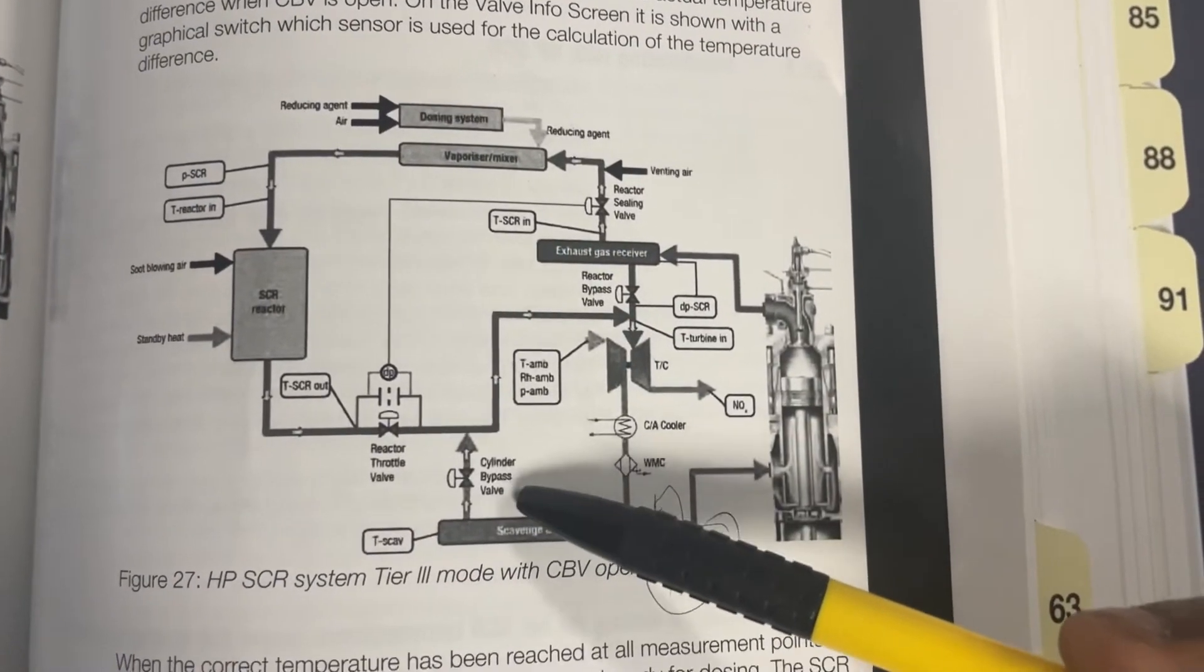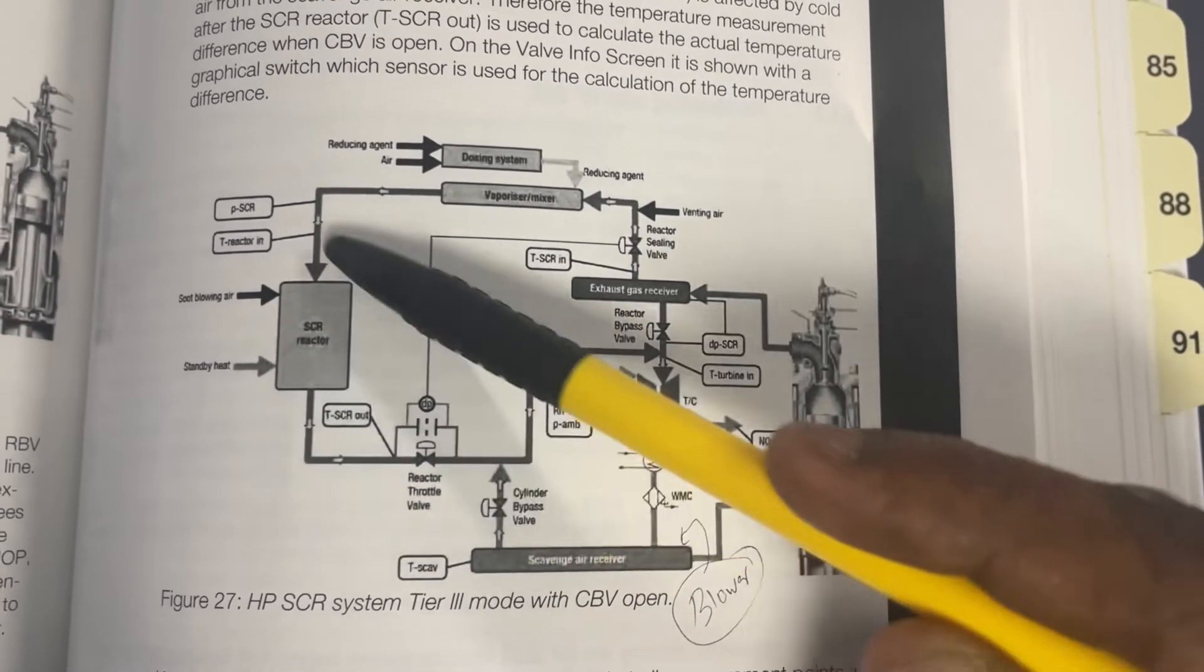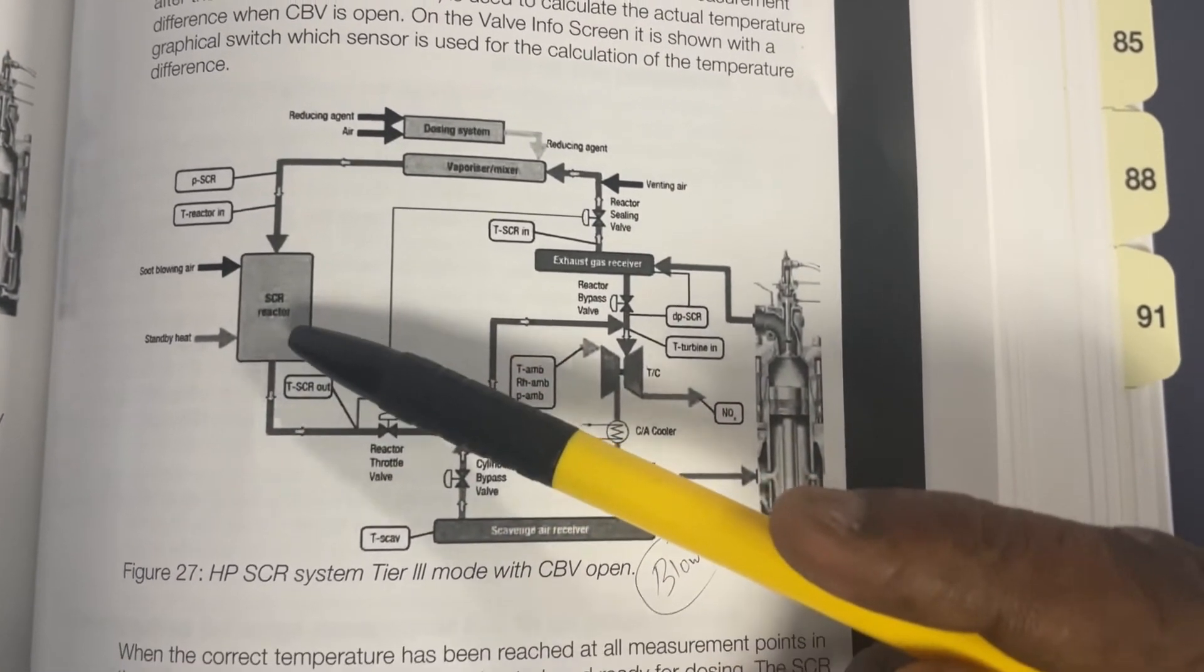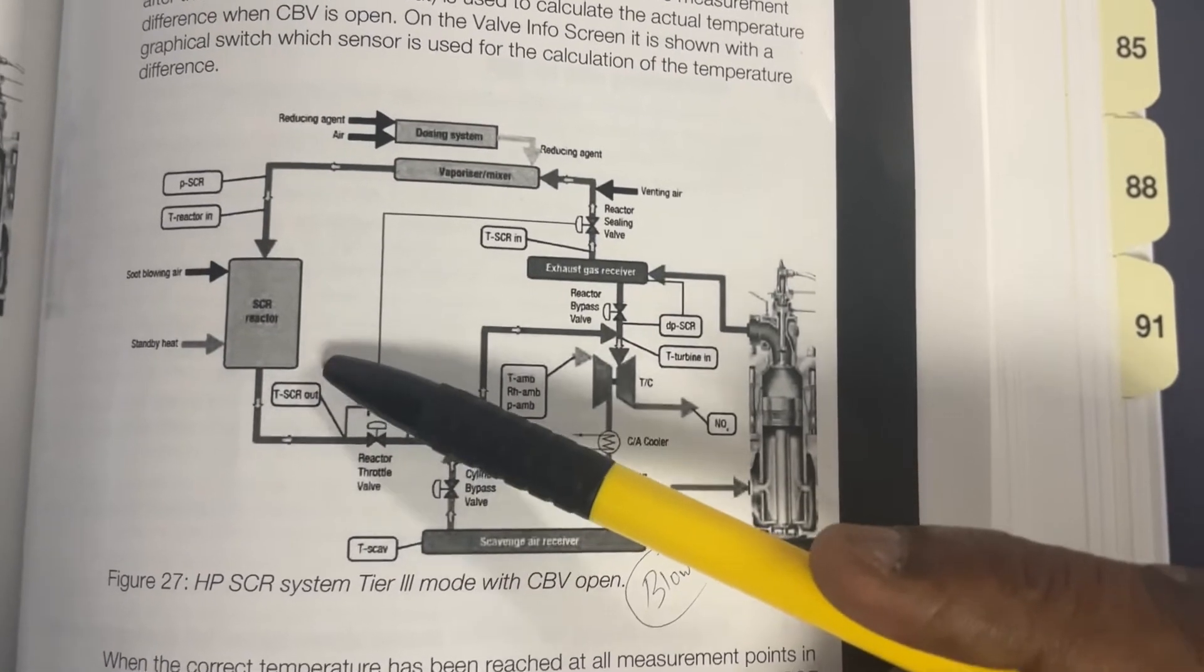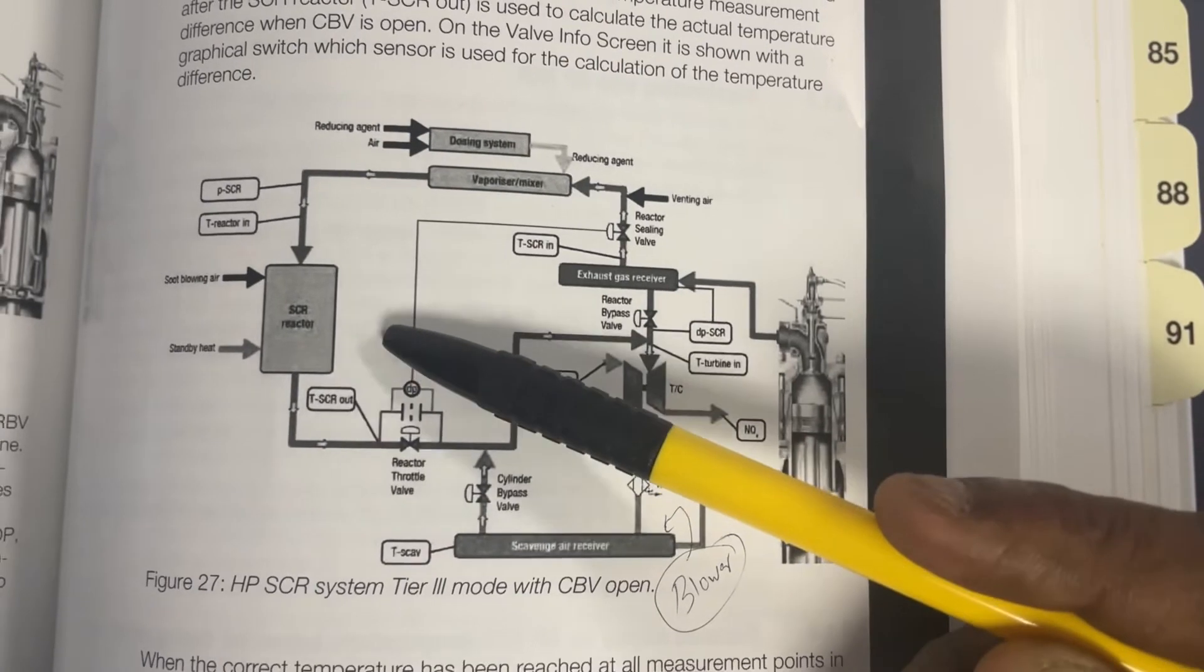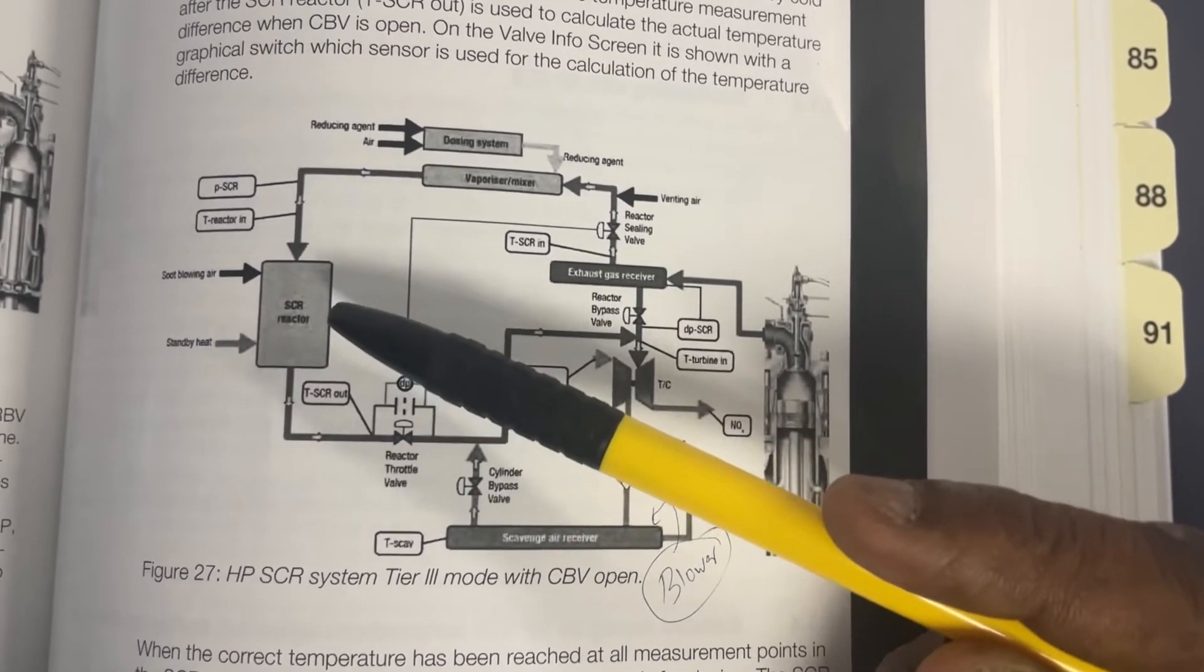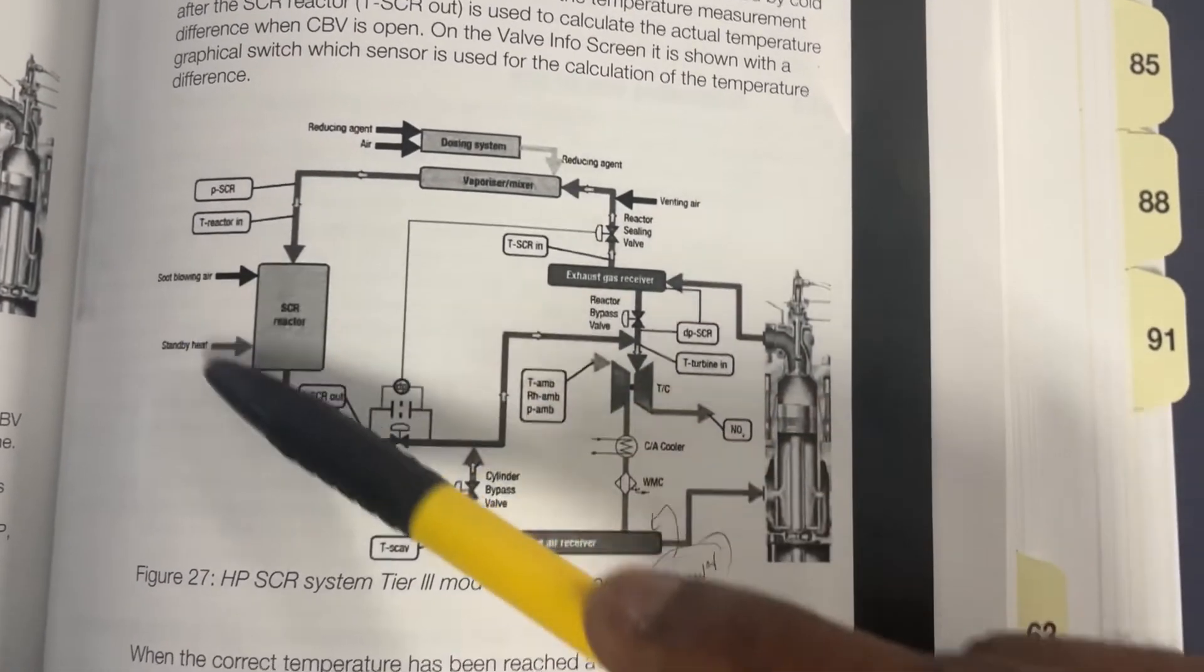The third function of the CBV is to dampen the temperature oscillation in the SCR reactor. This happens at some load where the temperature in the SCR reactor might oscillate. This is due to the temperature delay caused by the very large heating capacity of SCR. When this happens, the CBV is used to dampen this temperature oscillation.